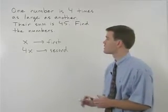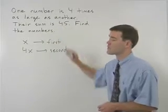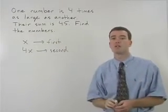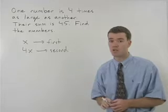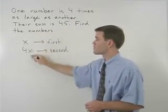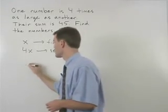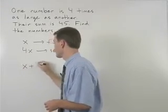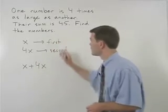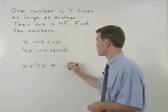Now let's look at the second sentence. Their sum is 45. The second sentence will tell you how you're going to set up your equation. Their sum, if our variables are x and 4x, will be x plus 4x. Is means equals 45.